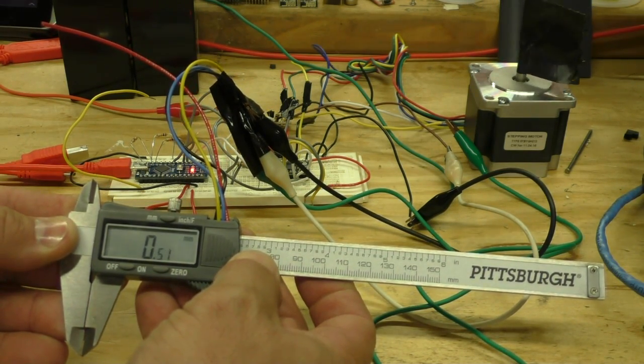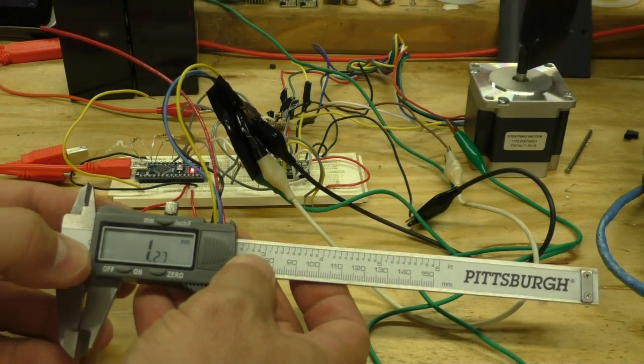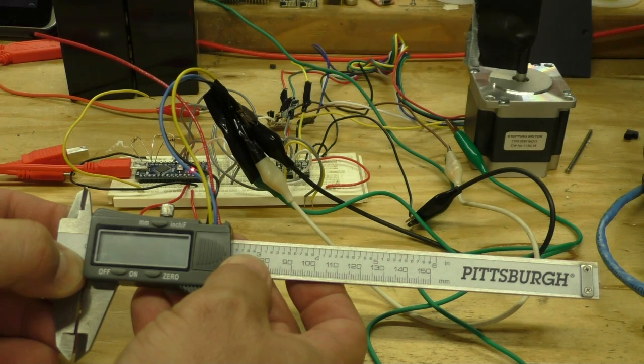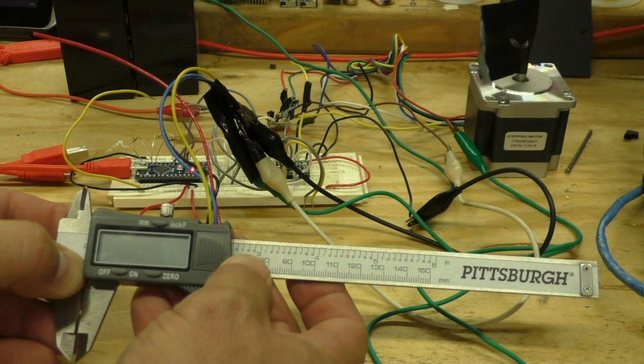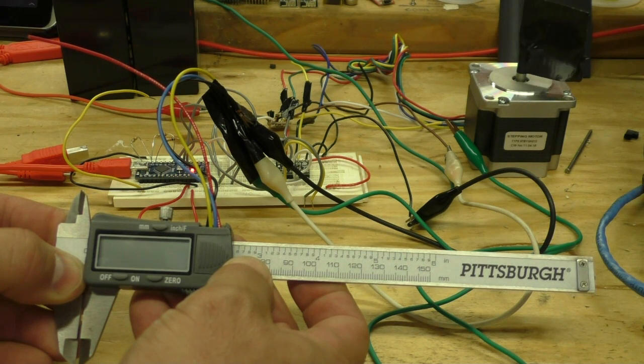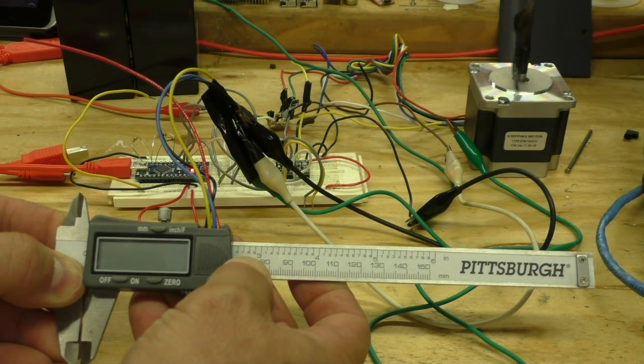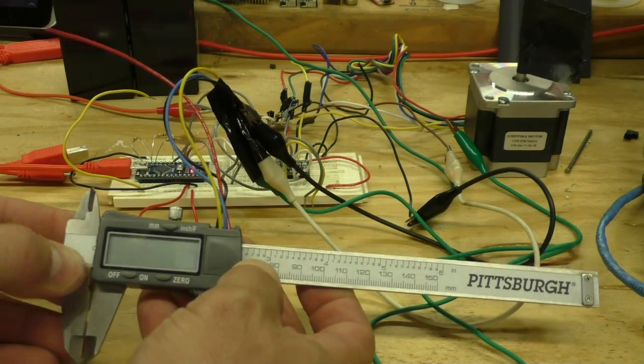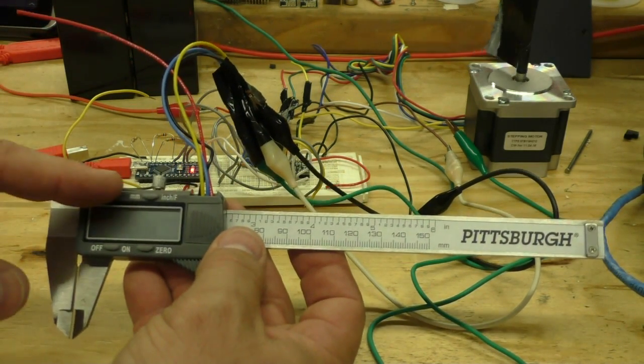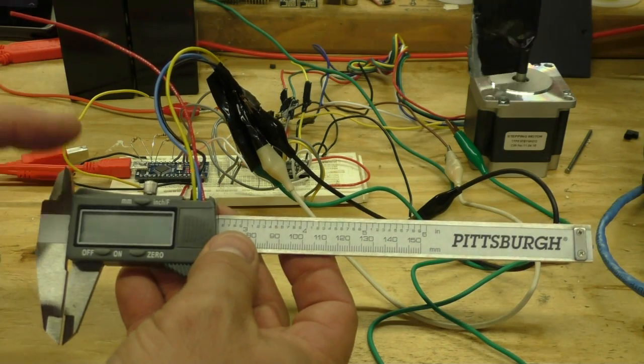There you go, it's speeding up. We'll slow it down a little - you can hear it slowing down. You see they're still off. That's because this brand of caliper, when the screen is off, still sends the measurements through the data wires.